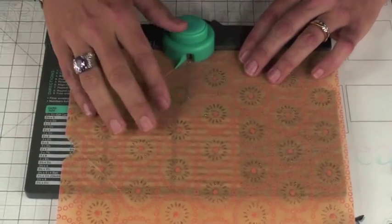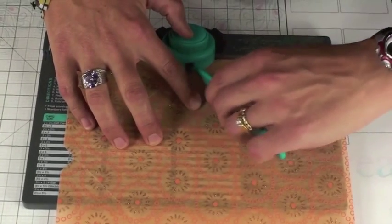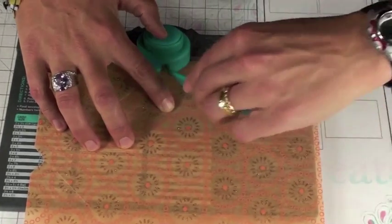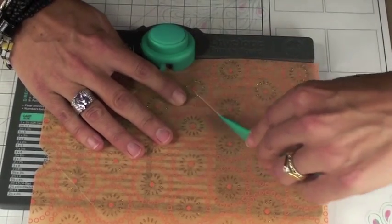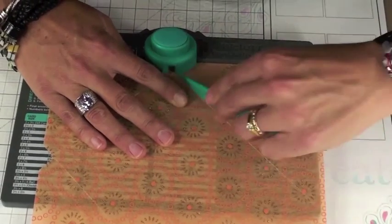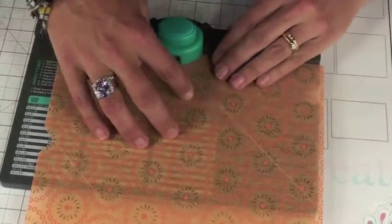Realign. So you really only measure once and then after that you're simply visually aligning the previous score line with that pointy notch on the punch. And so two more scores left to do and two more punches.